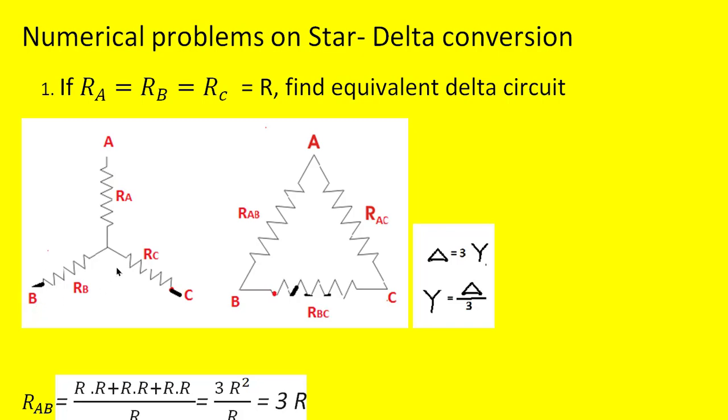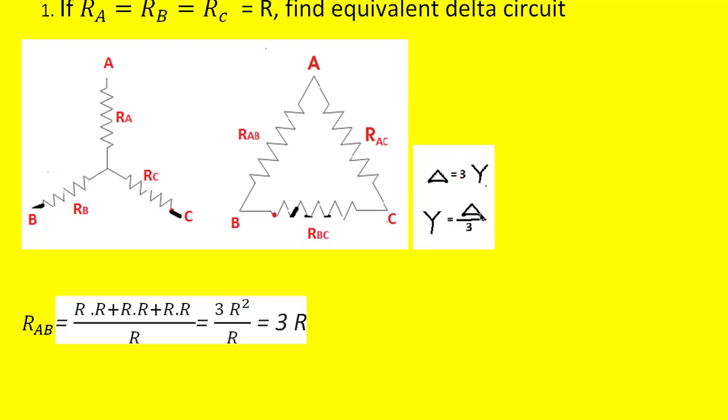It is given that there is a star-connected system whose resistors are Ra, Rb, and Rc, and their values are equal — each equal to capital R. In the theory we have already seen that Delta is equal to three times Star if the resistors in the star connection have equal value. Similarly, if the Delta has the same resistor in all branches, then the equivalent Star will be one-third of each Delta branch value.